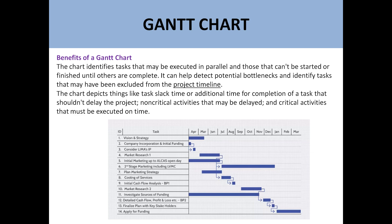Gantt charts have important benefits. The most important benefit is that it identifies tasks that may be executed in parallel. For example, take 'vision and strategy' and 'company incorporation and initial funding' — these two tasks are independent and can be run in parallel. So the first advantage is that you can identify tasks which are not interdependent on each other and can be executed in parallel.